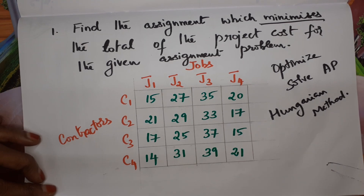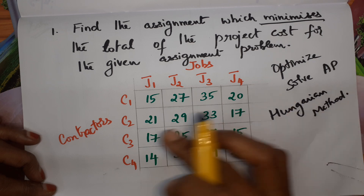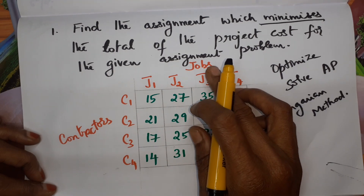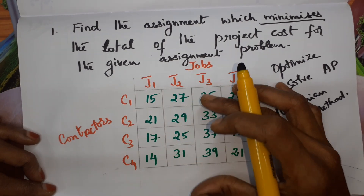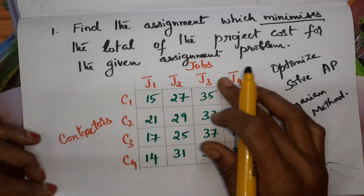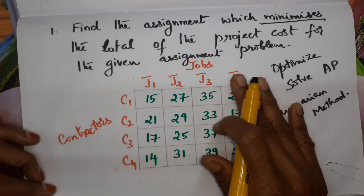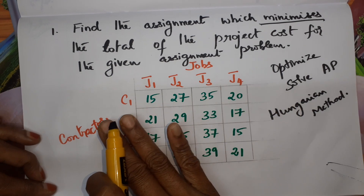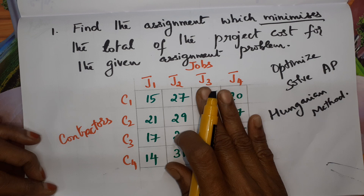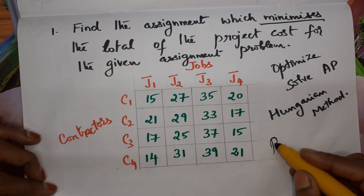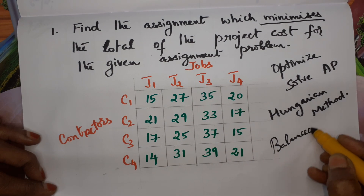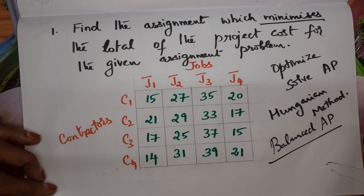The first step is we have to check whether the given AP is a balanced one or not. What do you mean by a balanced AP? A balanced AP means the number of contractors and number of jobs should be the same — it should be a square matrix, meaning number of rows and columns should be equal. Here, four rows and four columns are there, so we can assign one contractor to one job. The given AP is a balanced AP.